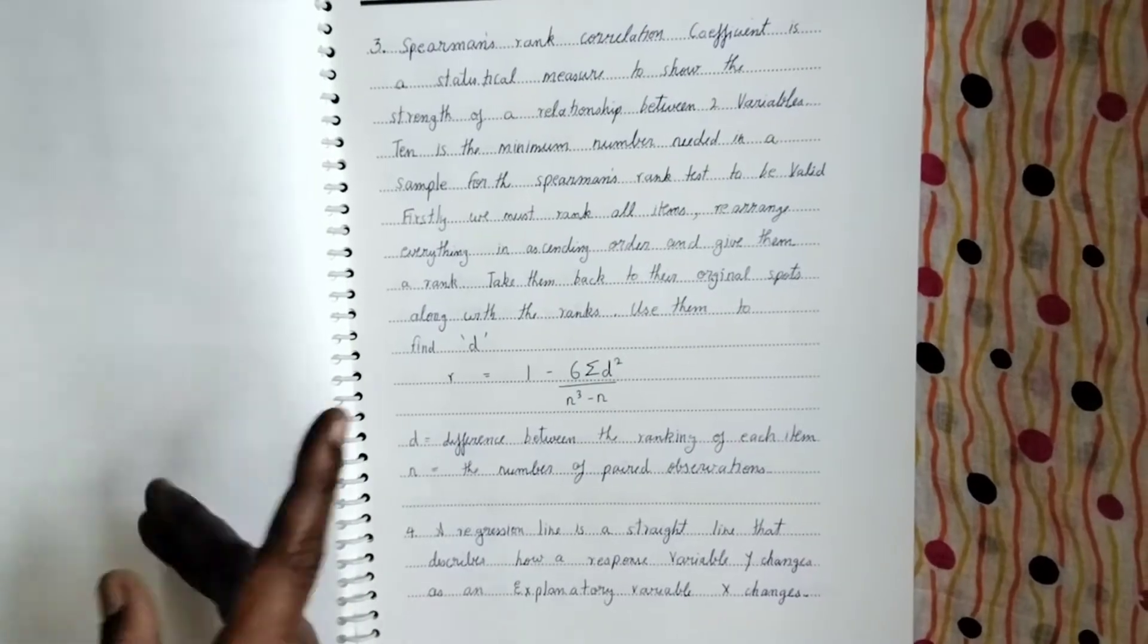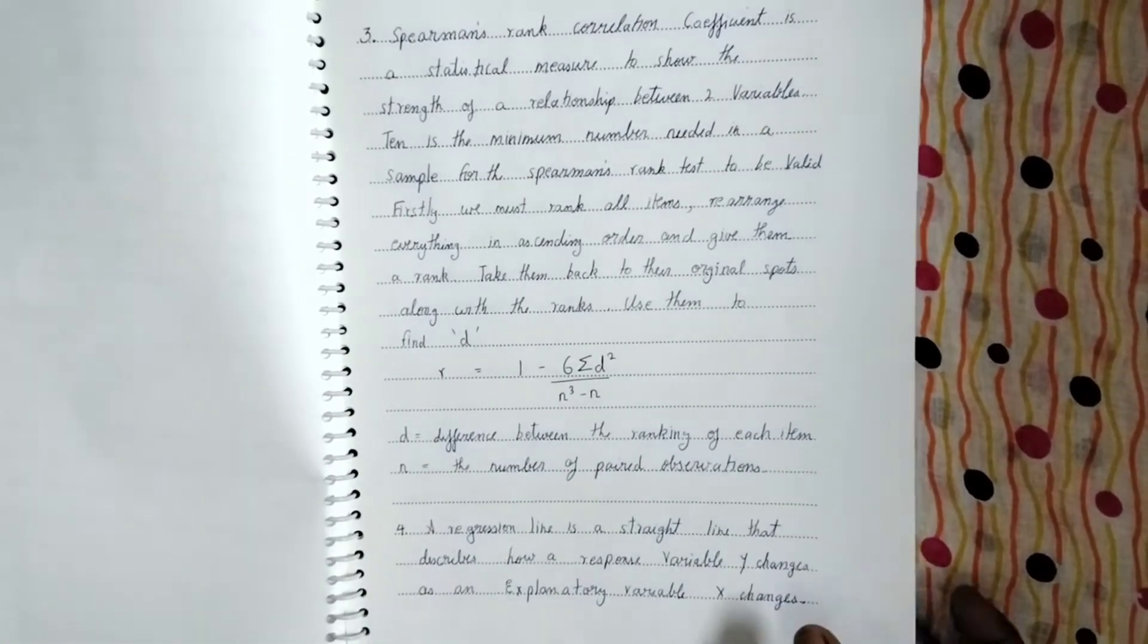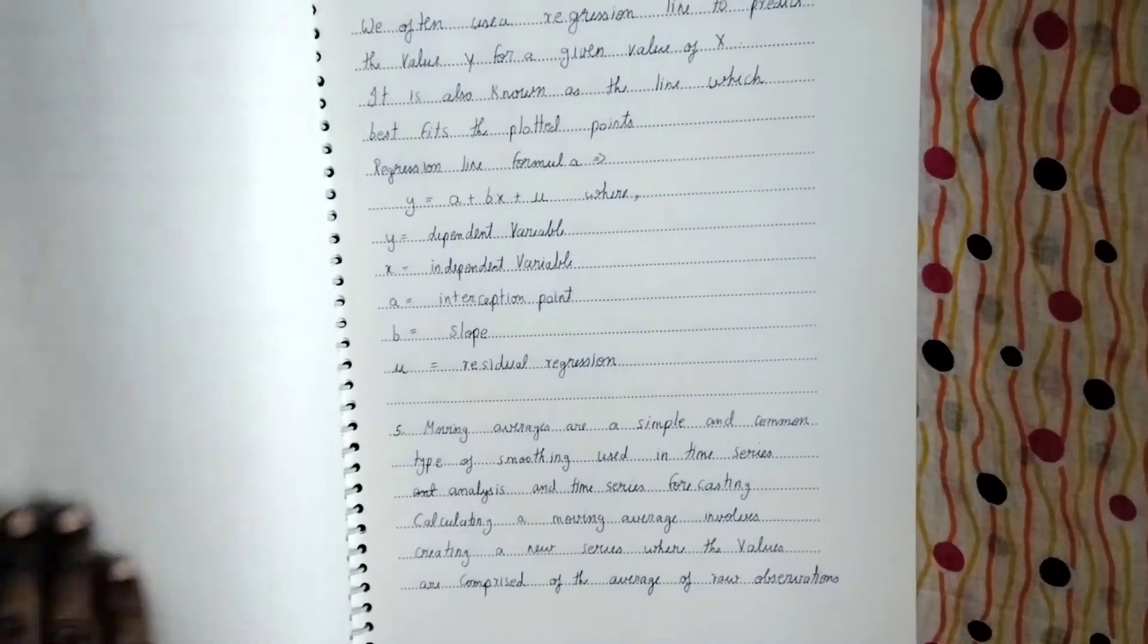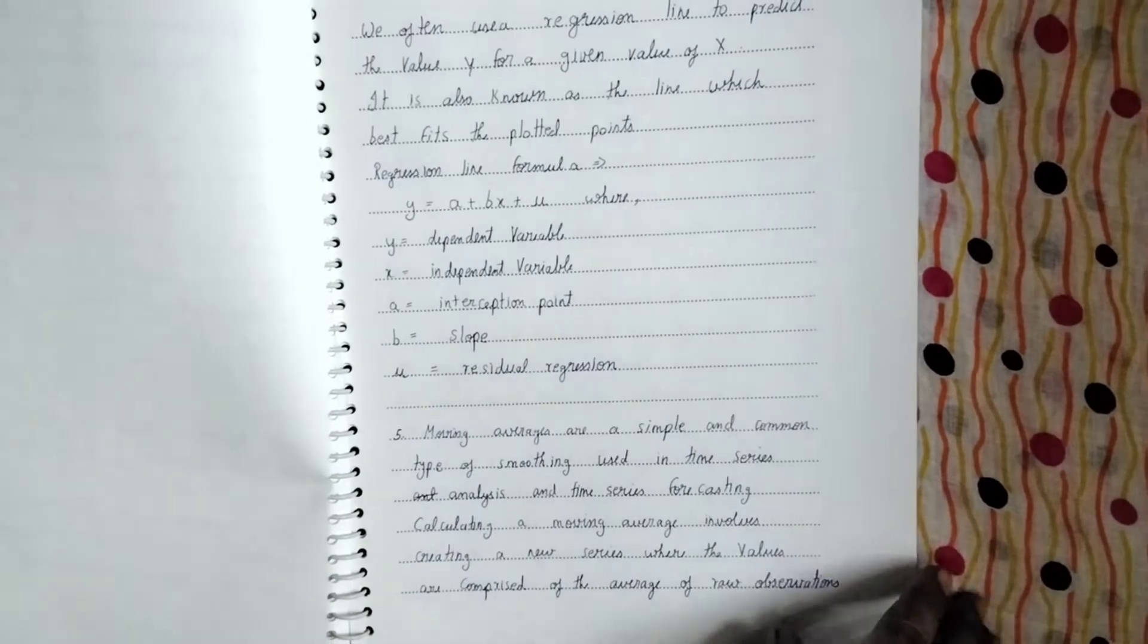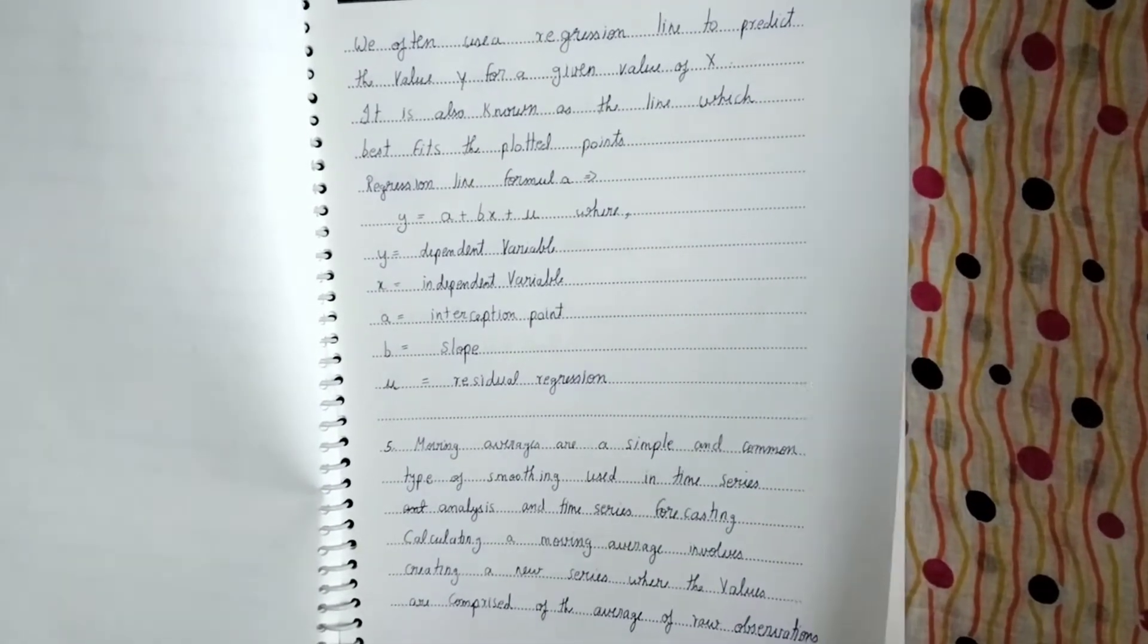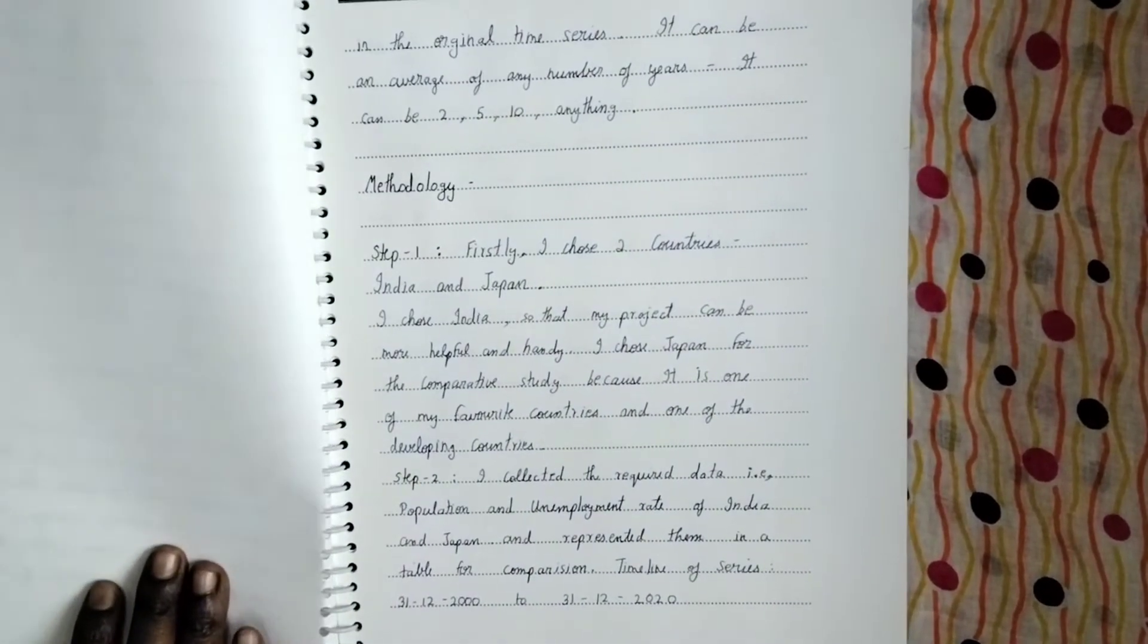He's going to find the correlation using Carl Pearson's correlation coefficient. And he's also going to do it by Spearman's rank correlation coefficient for which he's given the formula. And he's also going to do the regression line and moving average. So all this is there in the statistics portion for them. In Applied Math portion, they have this, they have brief statistics here. So all these tools he's going to use it.